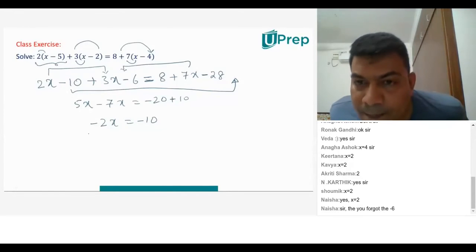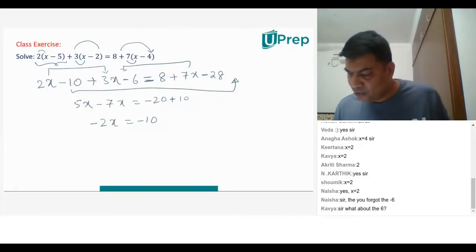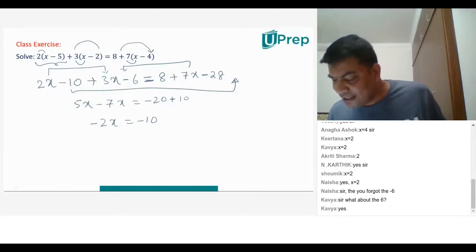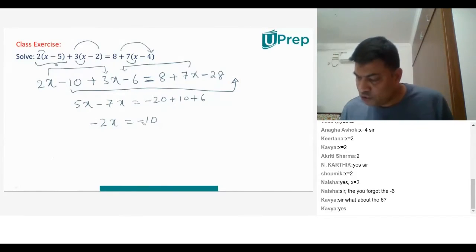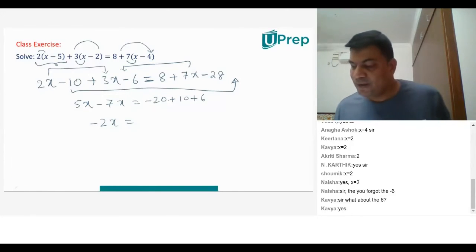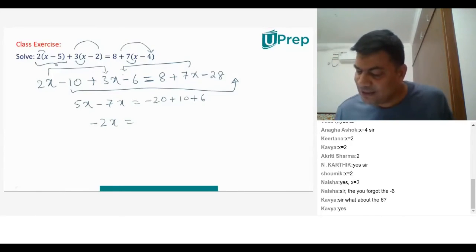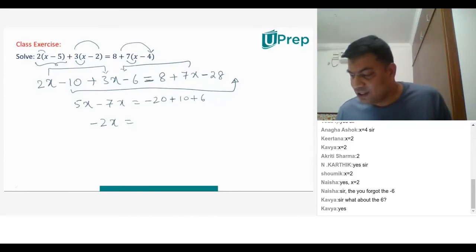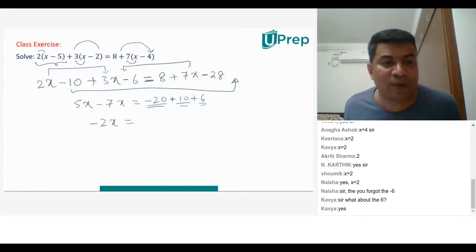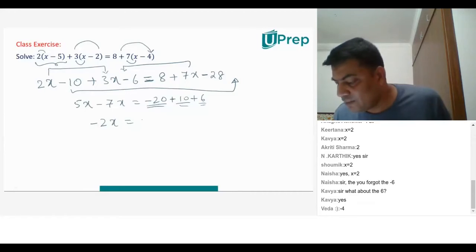A student points out: you have not taken minus 6. The teacher responds: I forgot to take minus 6 — we missed that out. Minus 6 goes on the right-hand side, so plus 6. Thank you so much, Hirad. So you have minus 20 plus 10, which is minus 10, plus 6. Minus 10 plus 6 will be minus 4. That will be minus 4.